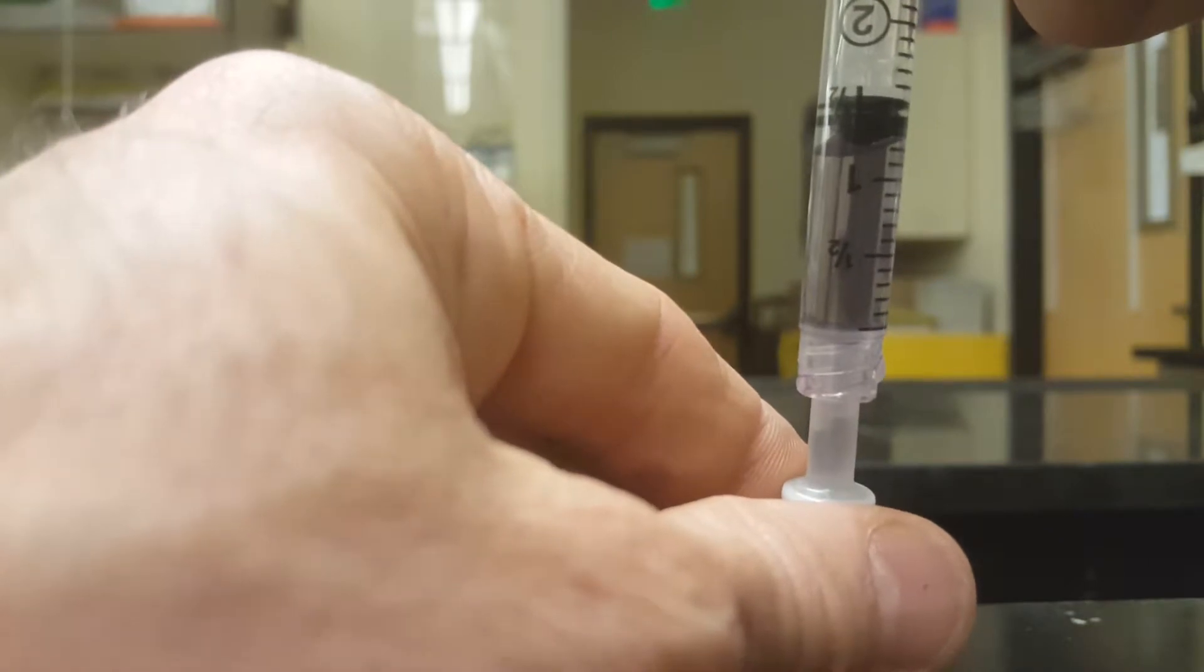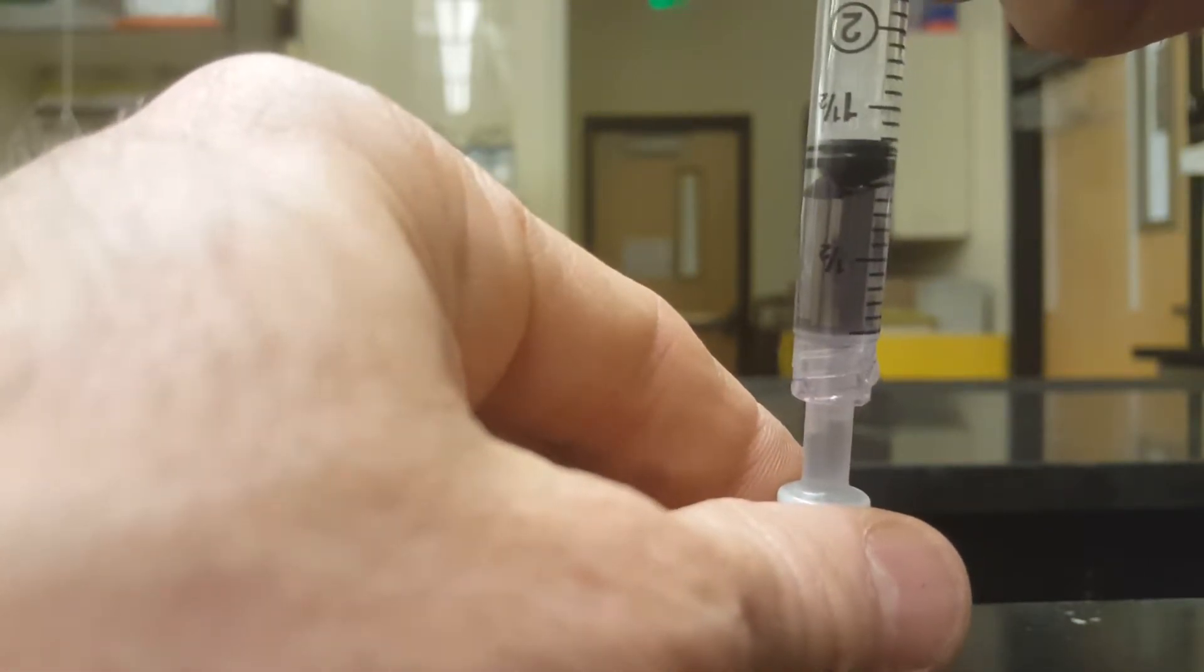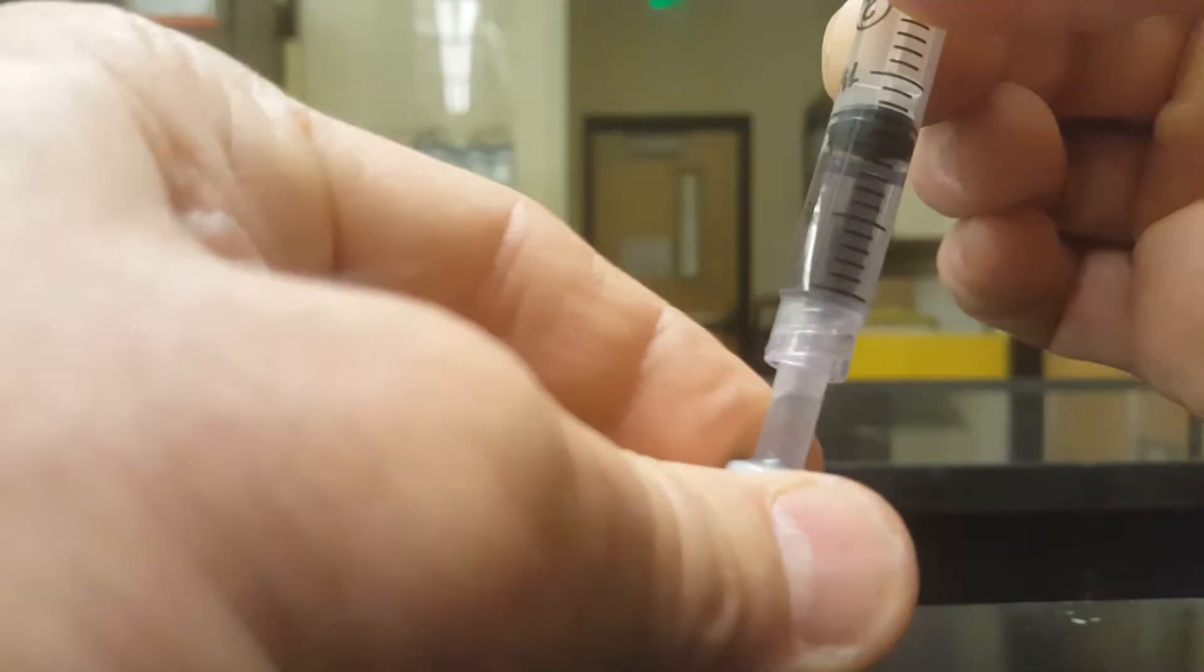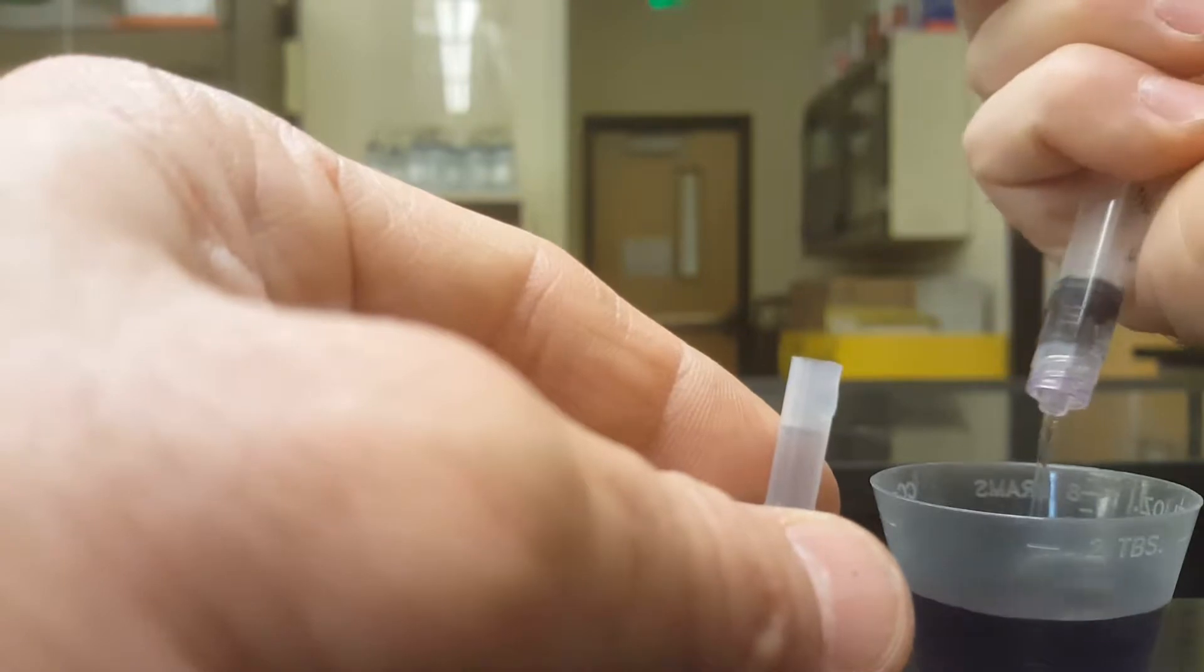And let's see if I can make that work. Okay, so there's one milliliter that I put into the cartridge. Now disconnect your syringe and put the remaining Kool-Aid back in your Kool-Aid reservoir.